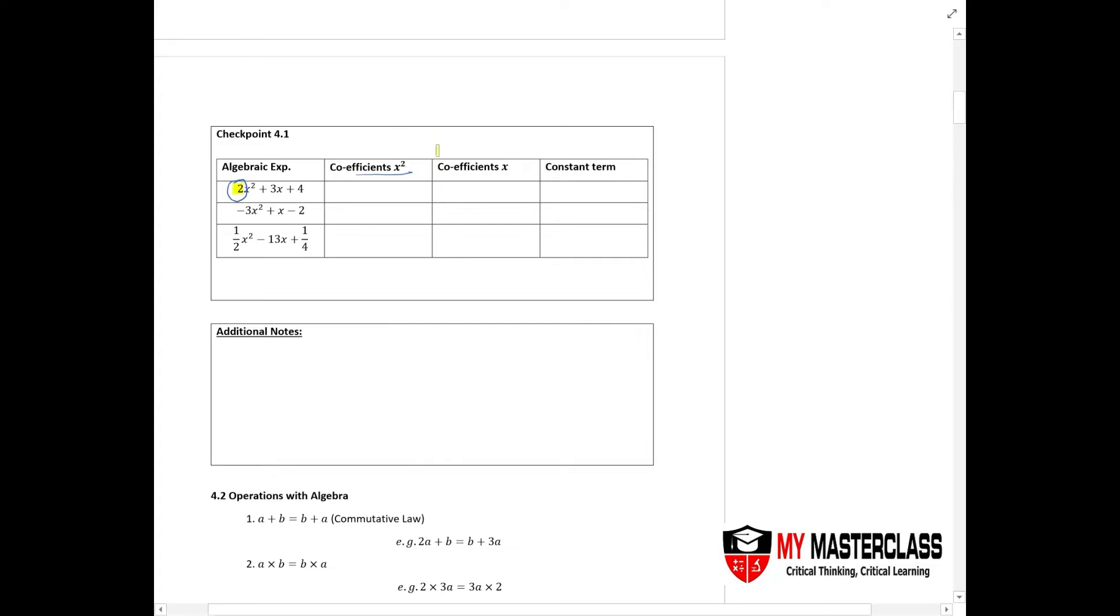Now then you have coefficient of x, which is the one in blue, which is 3. And lastly, you would have the constant term which is 4 over here.